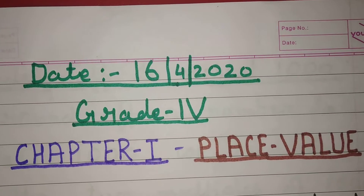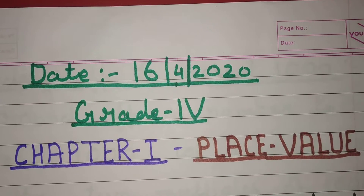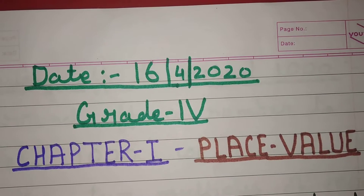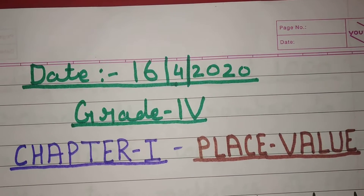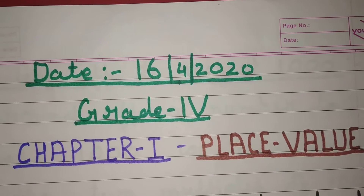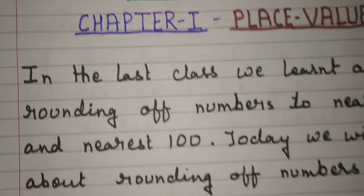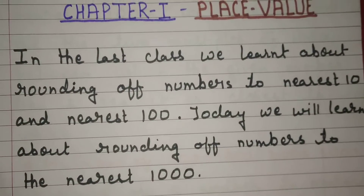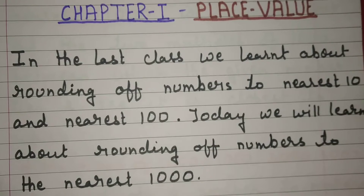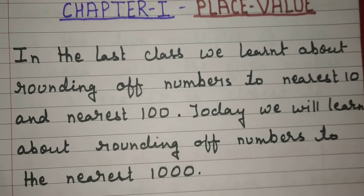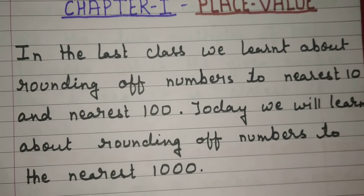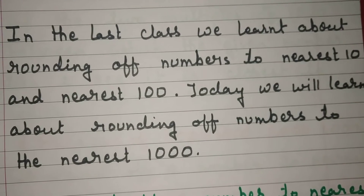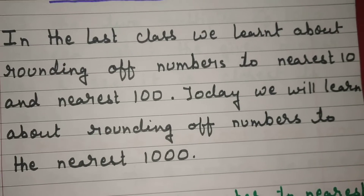Hello students, today is 16/4/2020. Grade 4, Chapter 1: Place Value. In the last class we learnt about rounding off numbers to the nearest 10 and nearest hundred. Today we will learn about rounding off numbers to the nearest thousand.